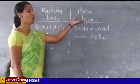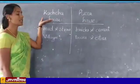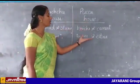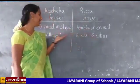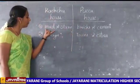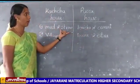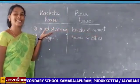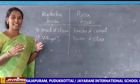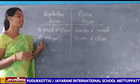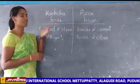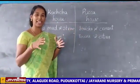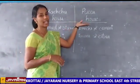Next, we are going to see what is a kachha house and what is a pucca house. Kachha houses are mostly found in villages. Pucca houses are mostly found in towns and cities. Kachha houses are made up of mud and straw. Pucca houses are made up of bricks and cement. That is a pucca house.